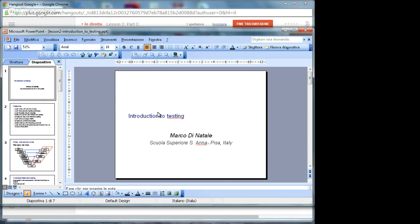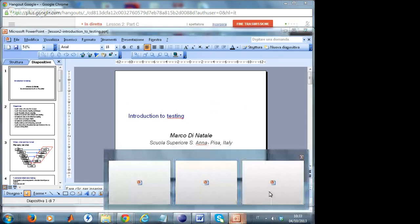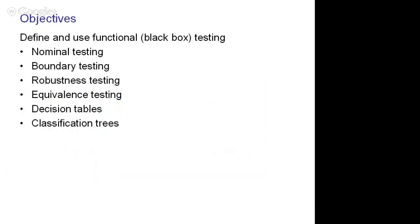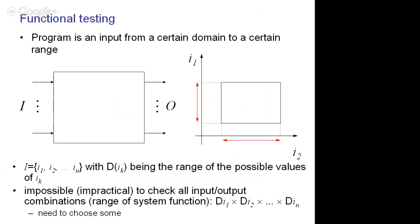That's it for the first part. Let's switch right away to functional testing. These are all the definitions we're going to cover, except we're not going to talk about decision tables. So we're going to define what is nominal testing, boundary testing, robustness, and so on. Many of these concepts will be fairly intuitive and simple — it will mostly be about definitions: what the meaning is and what the associated complexity is to perform those tests.